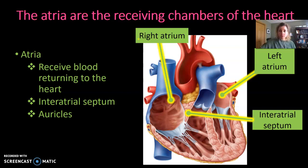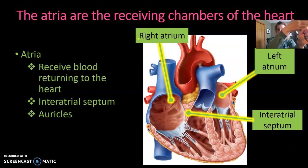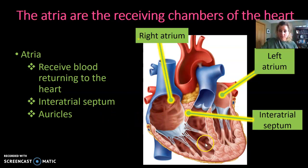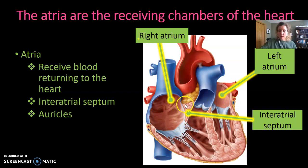Next we're going to talk about the different chambers of the heart. In this picture, we are looking at a coronal section of the heart, which means we've cut it to separate the front from the back and removed the front so we're looking at the back wall. The right atrium receives deoxygenated blood from the superior and inferior vena cavae, and the left atrium receives oxygenated blood from the left and right pulmonary veins. The two atria are separated by the interatrial septum, which we'll discuss more in the next episode.